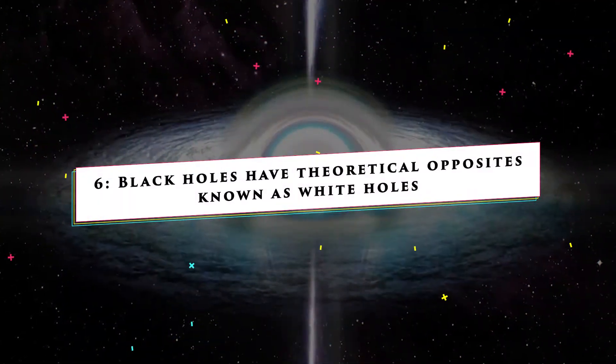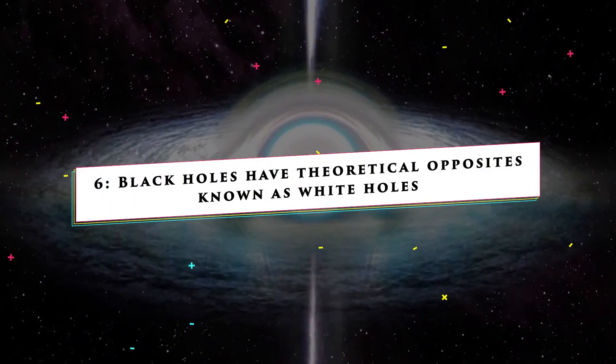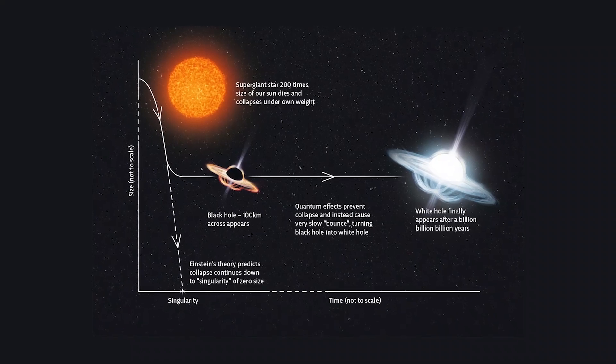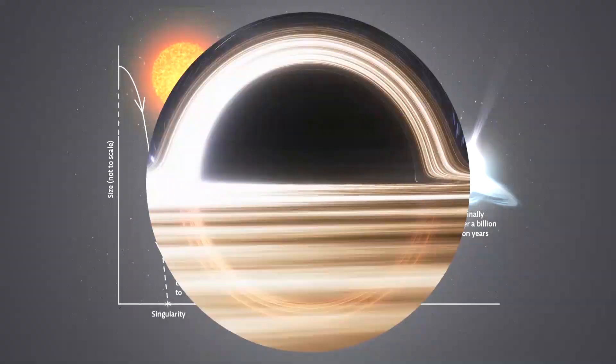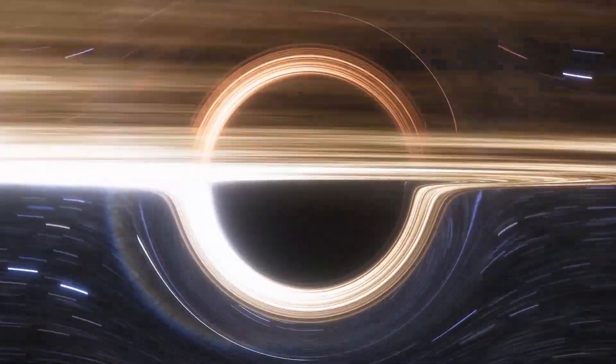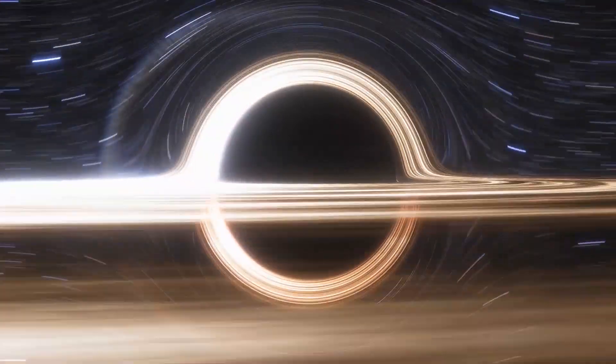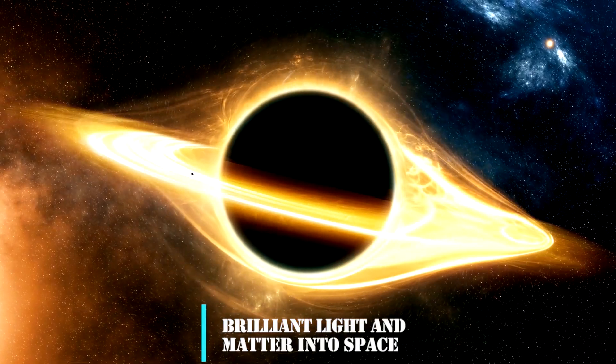Black holes have theoretical opposites known as white holes. The presence of white holes' theorized equivalence to black holes is an intriguing idea that originates from the cosmic abyss, where darkness rules supreme. These mysterious white holes defy expectations by releasing brilliant light and matter into space,